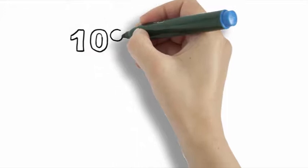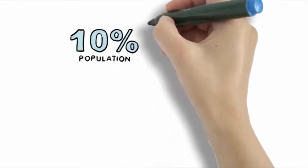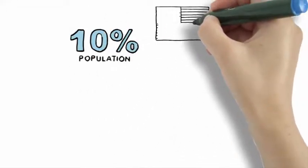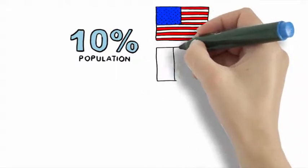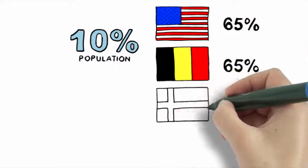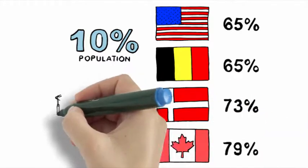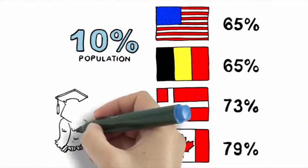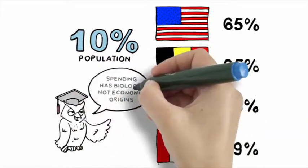The costliest 10% of the American population accounts for 65% of total spending, exactly the same as Belgium. In Denmark and Canada, the costliest 10% account for 73% and 79% of spending respectively, suggesting that concentrated spending has biologic, not economic origins.